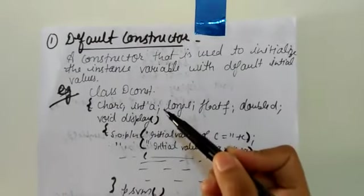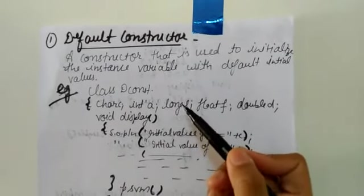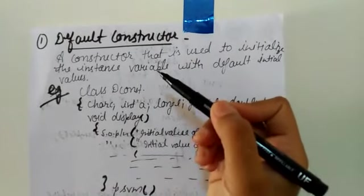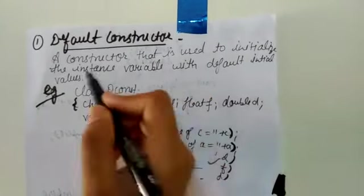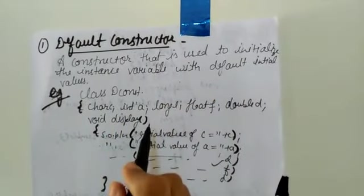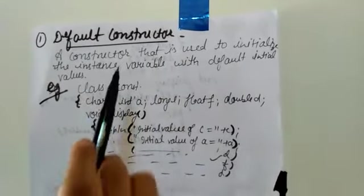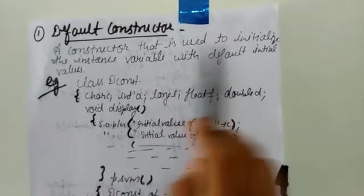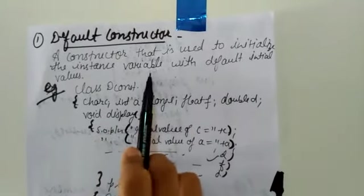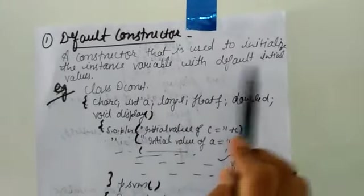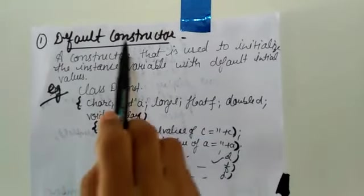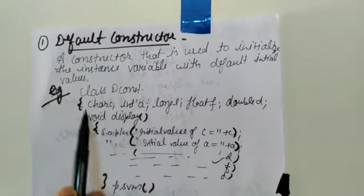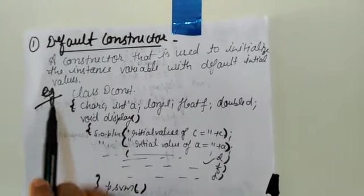Again, I am considering four constructor types with all their definitions and examples. A constructor that is used to initialize instance variables with a default initial value is known as a default constructor. We have read about this previously.